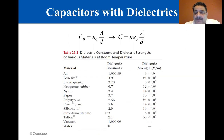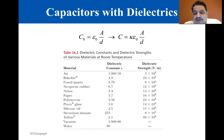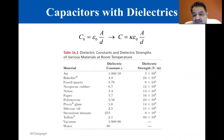For a parallel plate capacitor where the capacitance in the absence of a dielectric is C sub-zero, we can express the capacitance in the presence of a dielectric as shown. From this result, you might think that the capacitance could be made very large by decreasing D, the separation between the plates.